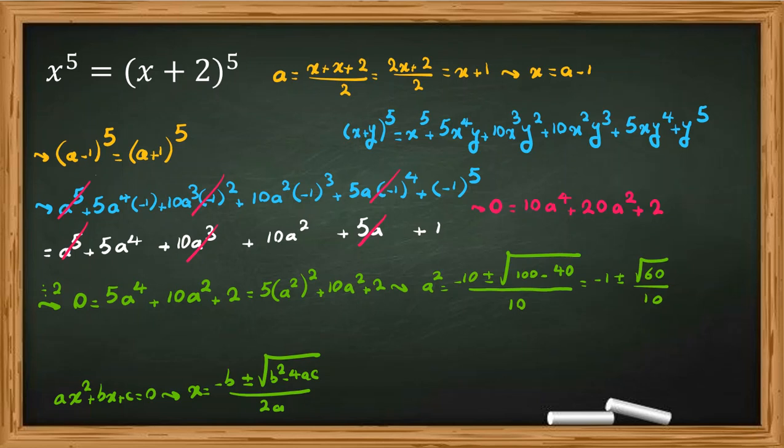So here we conclude that a equal to plus minus square root of negative 1 plus minus square root of 60 over 10. And because by definition of a, x is a minus 1, so here we can say x equal to plus minus square root of negative 1 plus minus square root of 60 over 10 minus 1.